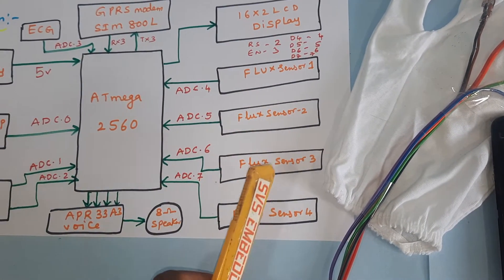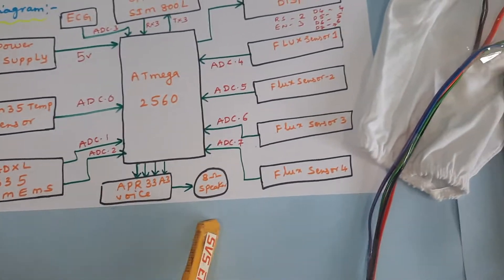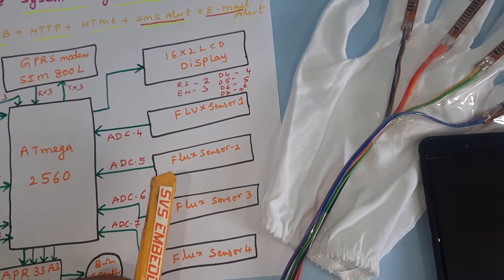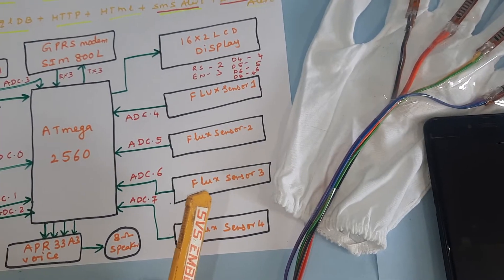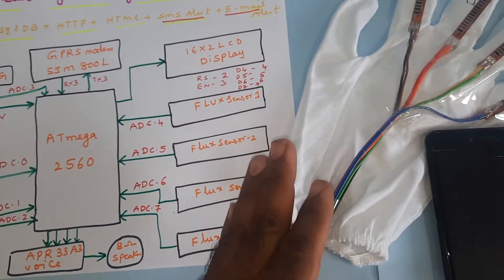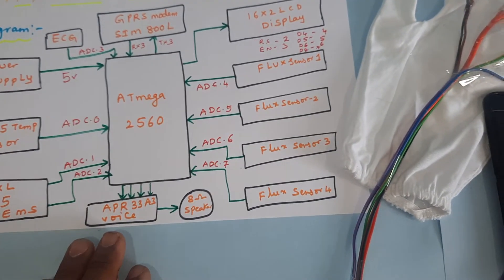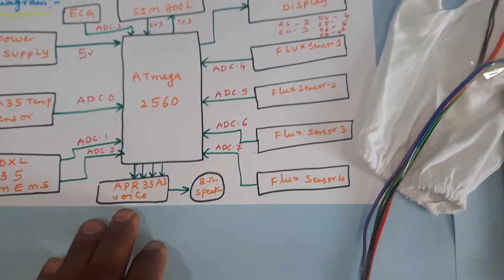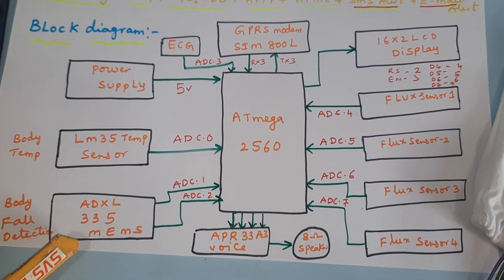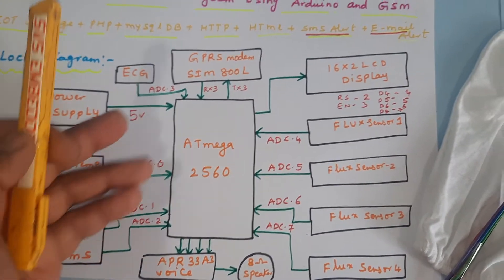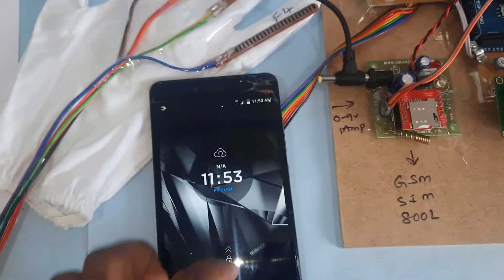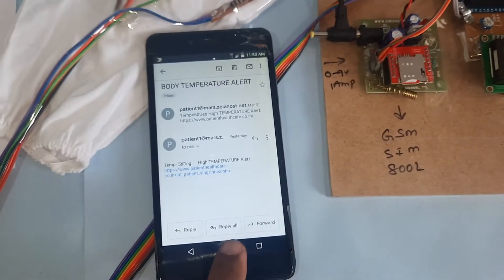Flex sensors one, two, three, and four provide voice alerts such as 'I need help,' 'I need food,' 'I need to go to washroom,' and 'I need medicine.' The voice comes from an APR3383 voice module with an 8-ohm speaker. Temperature, ADXL, and ECG values are sent to the server at patienthealthcare.co.in.